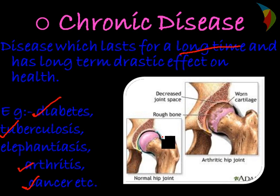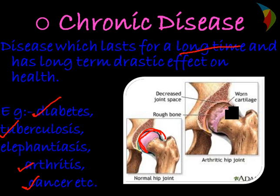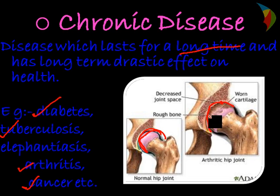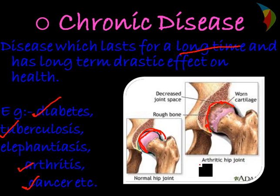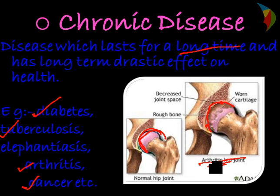Another example is arthritis. In a normal hip joint you can see the cartilage, but in arthritis this cartilage is damaged and there is a decreased space between the joints. Many people, like grandmothers, face arthritis in the knee. These diseases that last for a long time or a lifetime are chronic diseases.